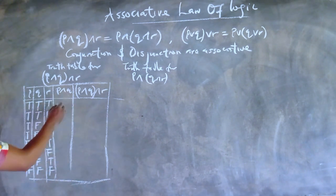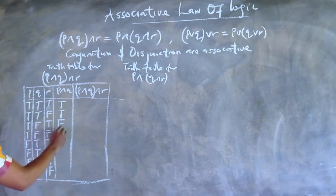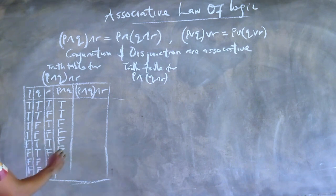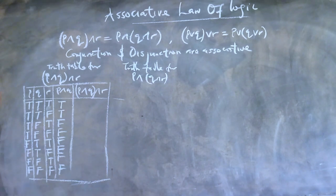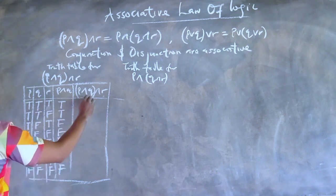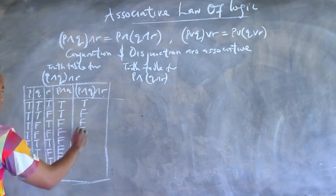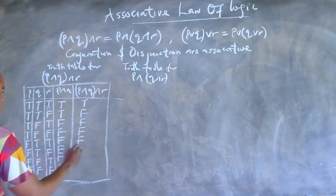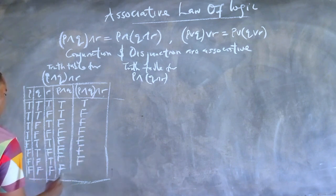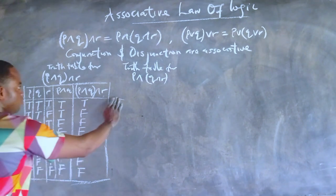The next statement is an and statement — a conjunction. For P and Q, remember that for an and statement to be true, both statements need to be true. If the truth value of one statement is true and the other is false, the truth value will be false. For the final column, we use the P and Q column together with R — if one is false, the compound statement is false.